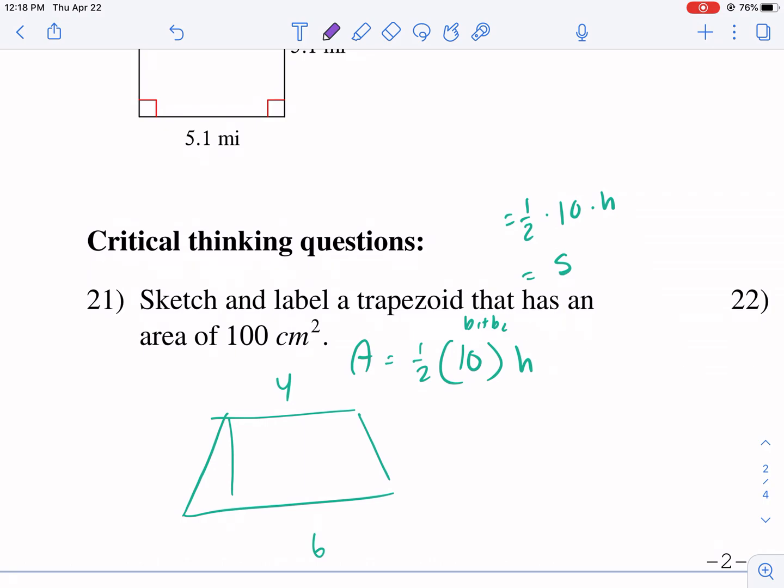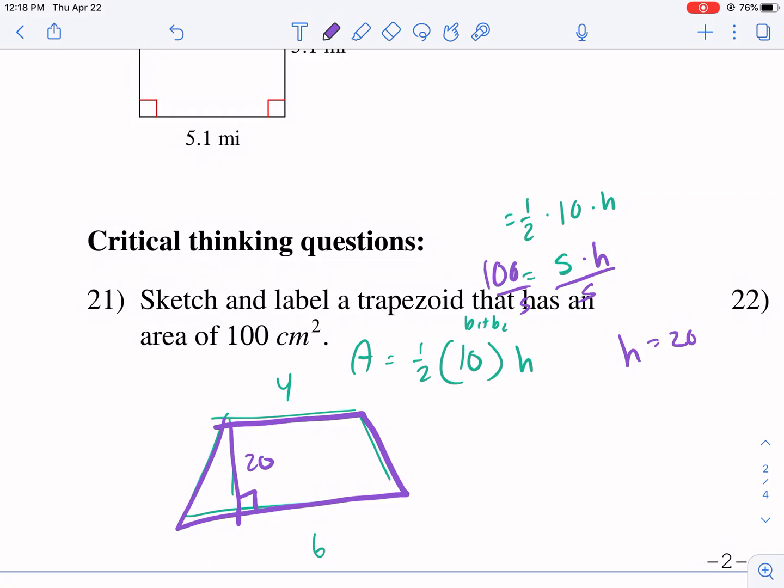So now I have 5 times the 1 half times my height. And that needs to be set equal to 100. So I need to divide by 5, divide by 5, and I get h equals 20. So this needs to be 20. So there's my cool trapezoid like that.